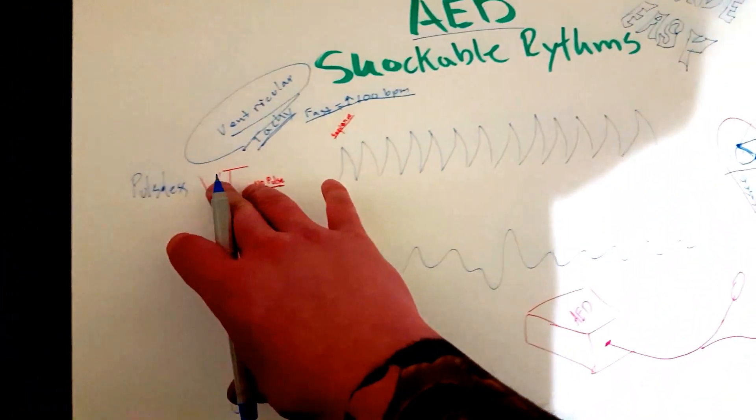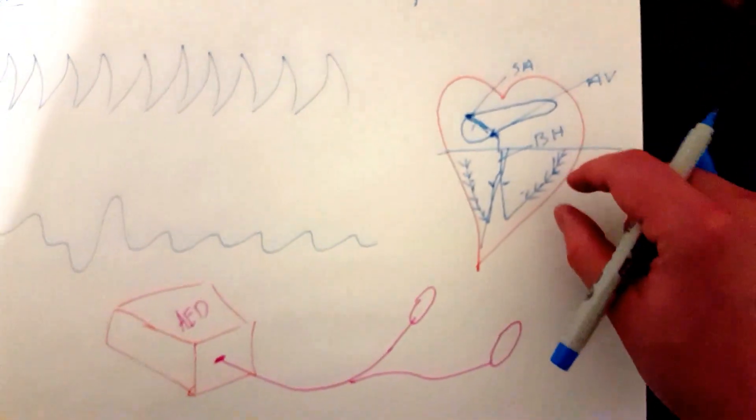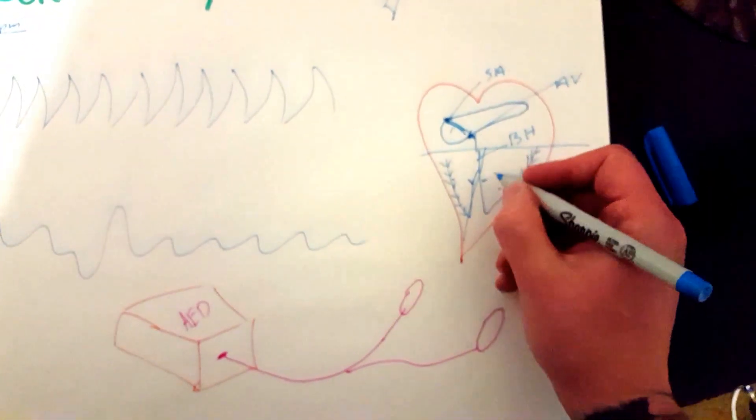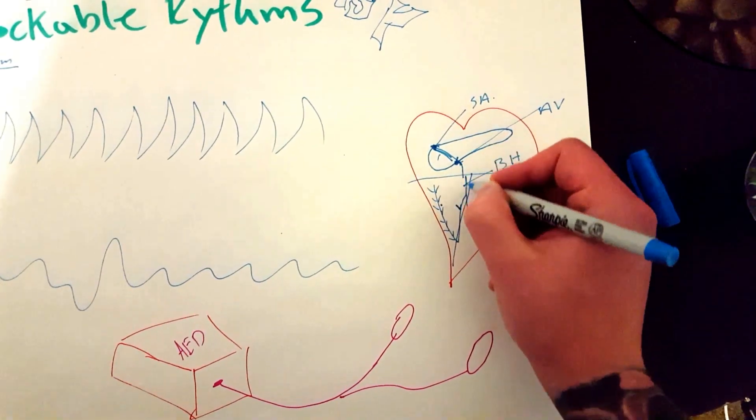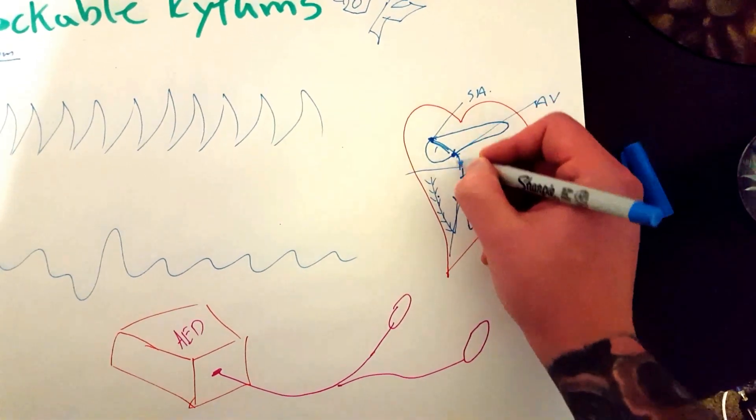Well, when you have VTAC and VFib, you have electricity which is kind of just doing its own thing down here. So it's not following this sequence.